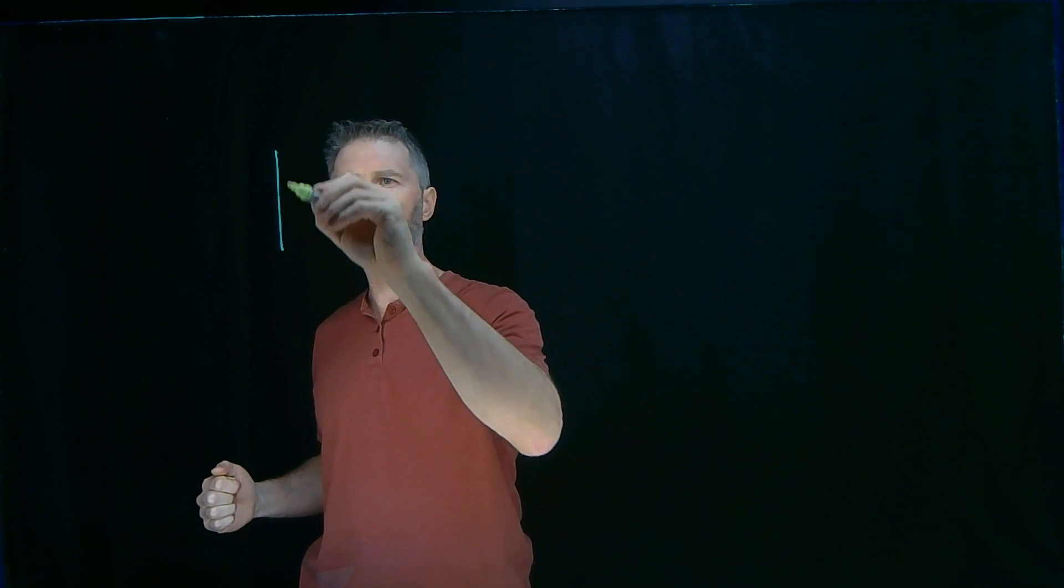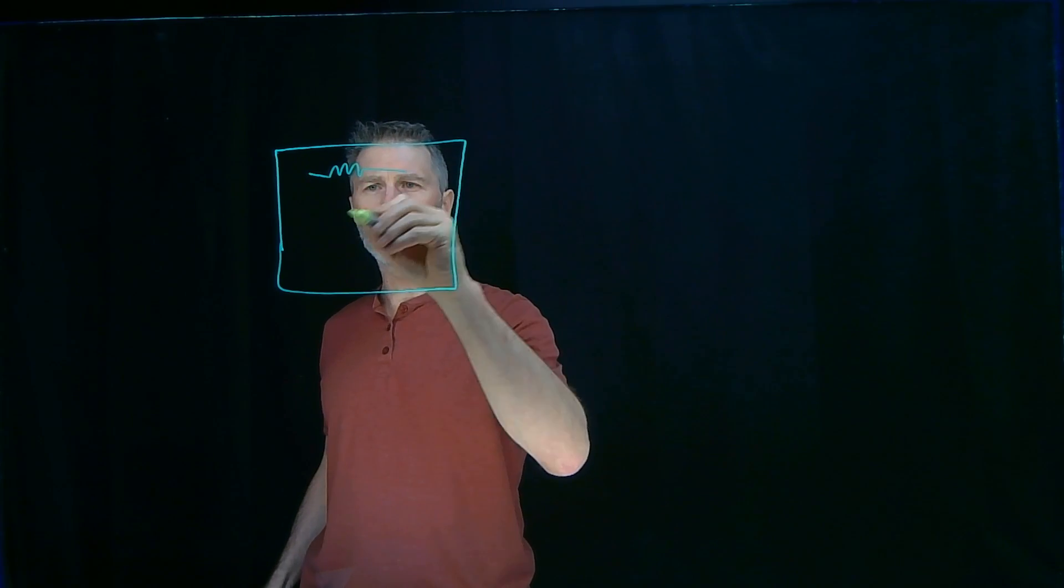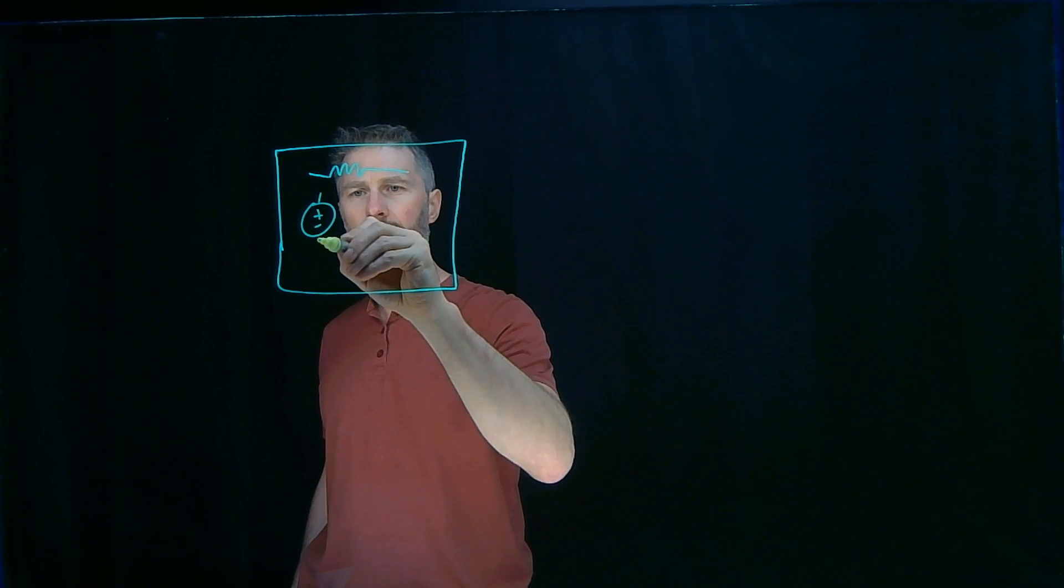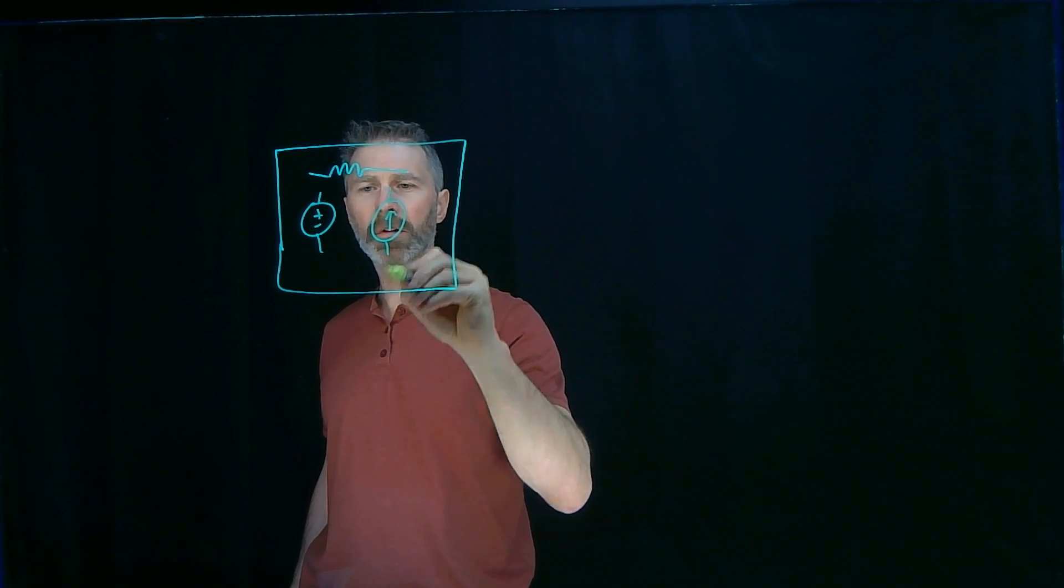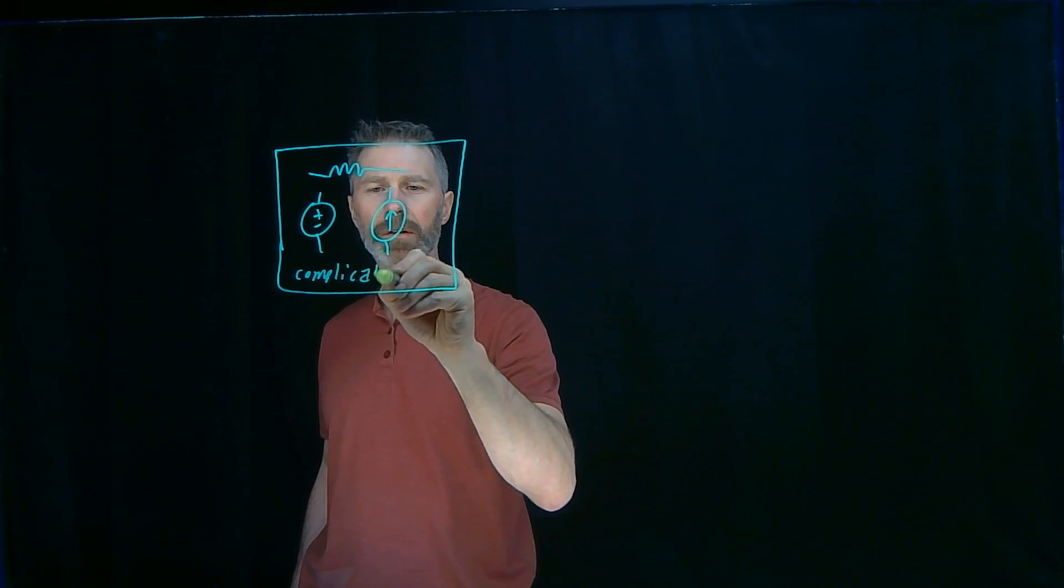Let's go back to the very beginning of what Norton's theorem is. It says you can have any network with resistors, voltage sources, and current sources. Some number of those, and it can be really complicated, a really complicated arrangement of these.